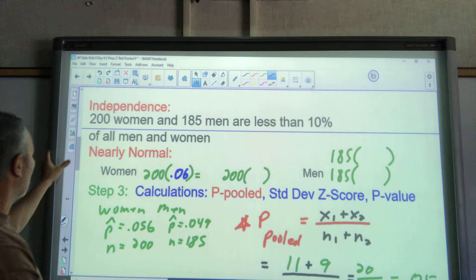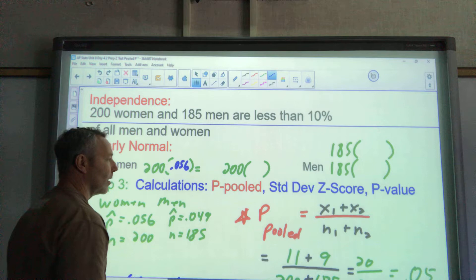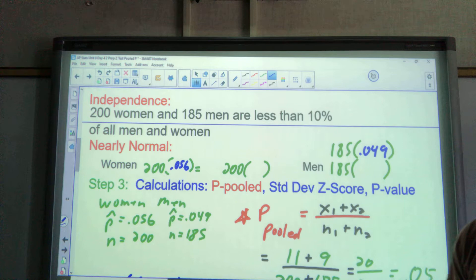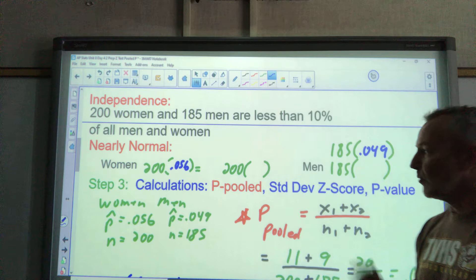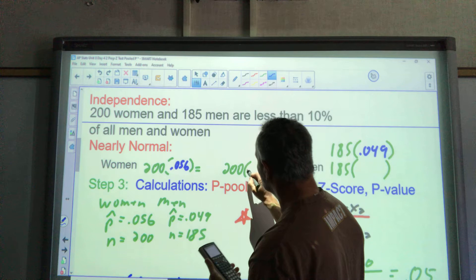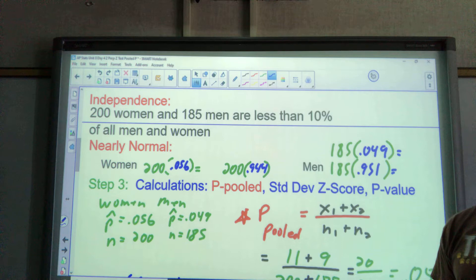Now I'm sure that you could use that in my nearly normal condition here because now we have n times P and n times Q. But before you start a problem, you're supposed to check the conditions. Before you start a problem, you don't have the value of P pooled. So you're checking it before you do your work. What we normally do here is use the P hat given in the problem because at the time, it's the best figure we have. For the women, it was 0.056. I'll get the one minus that over on the other side.